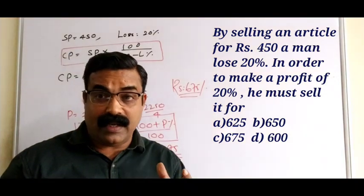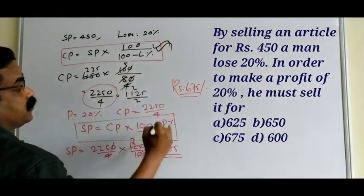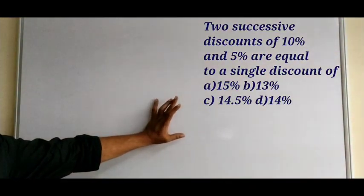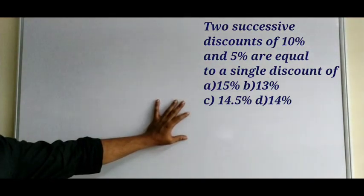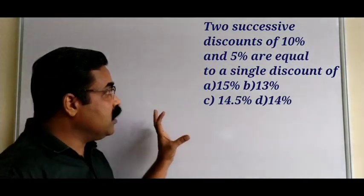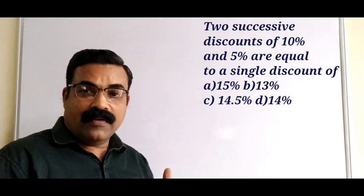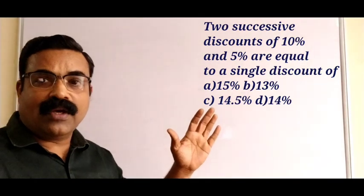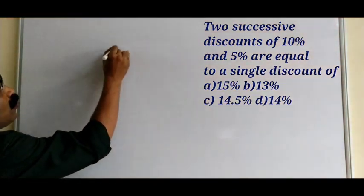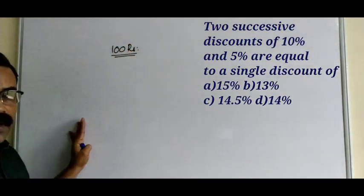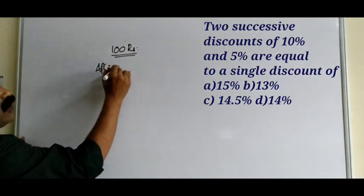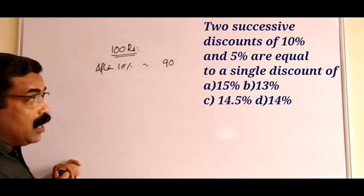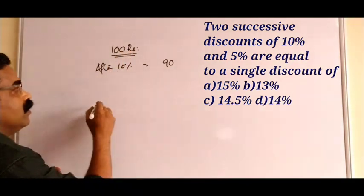You can mark ₹675 as the correct answer. These important formulas are very critical — note them down. The next question: two successive discounts of 10 percent and 5 percent are equal to a single discount of — four options are given. Ten percent and then five percent discounts are applied successively. What is the total single equivalent discount?